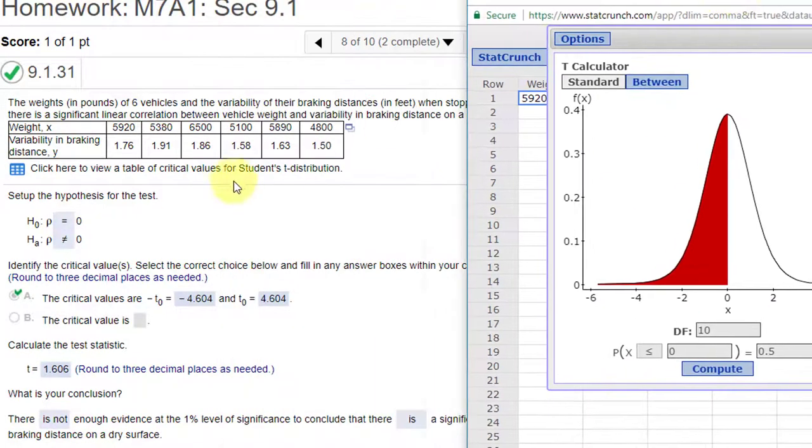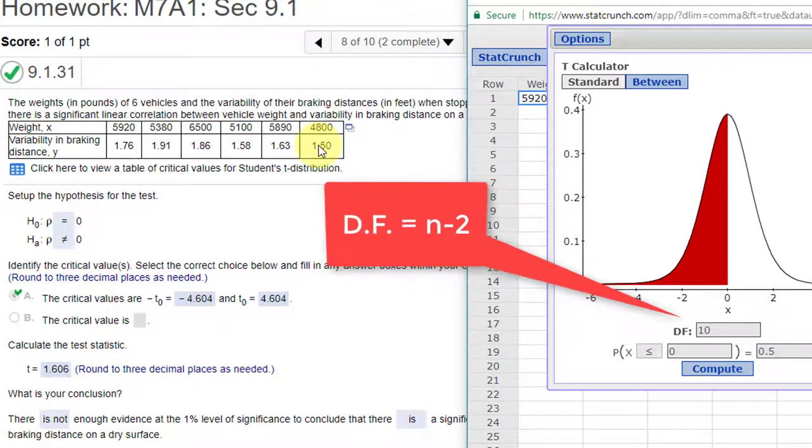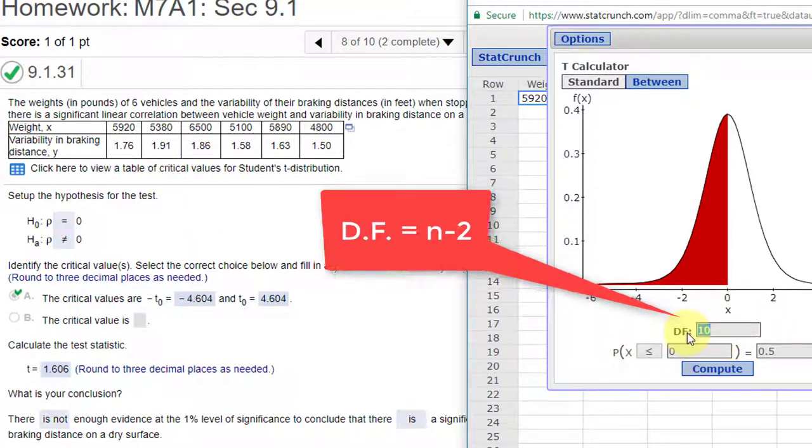We have 1, 2, 3, 4, 5, 6 pairs, and the degrees of freedom for this type of test is n minus 2, which means we've got degrees of freedom of 4.